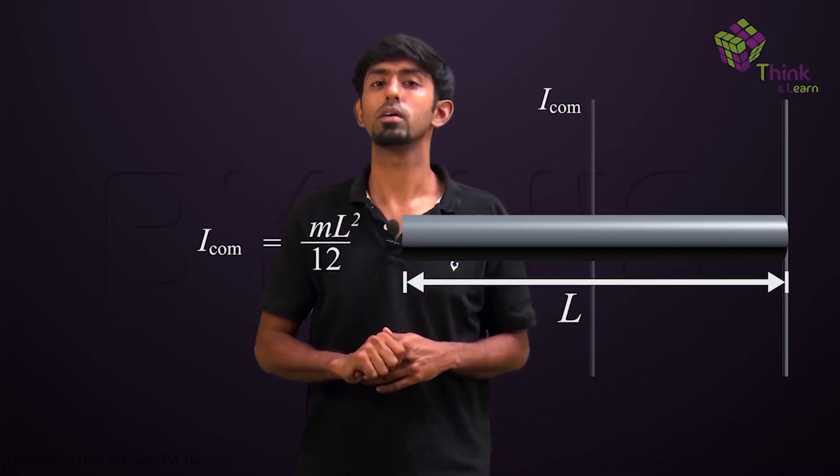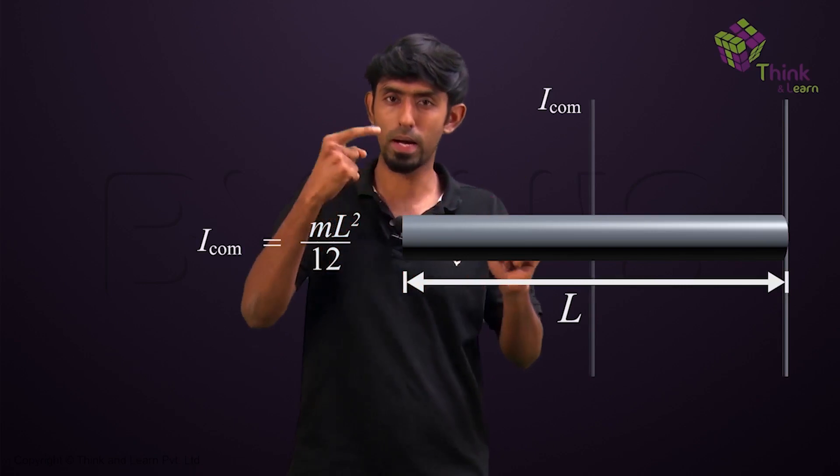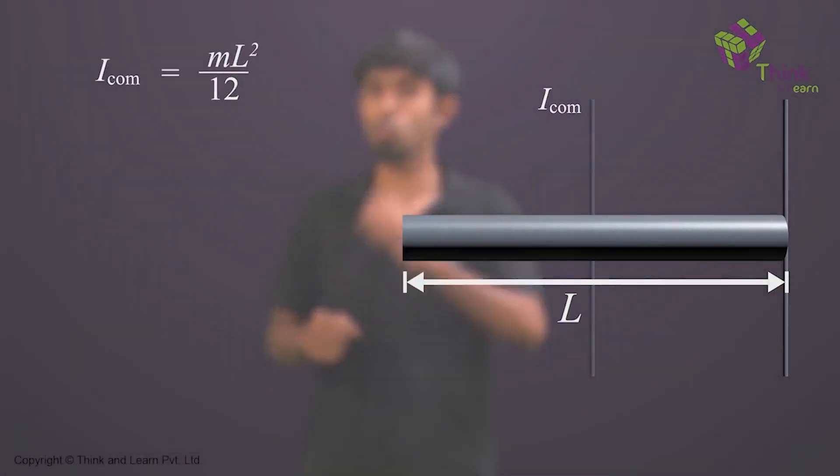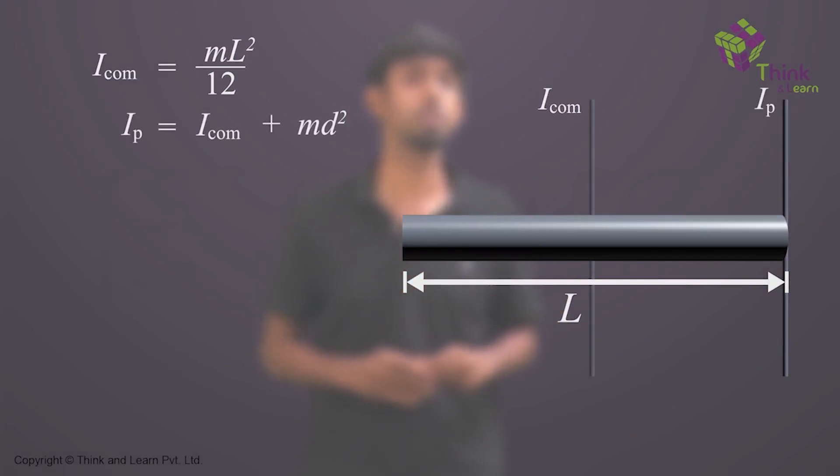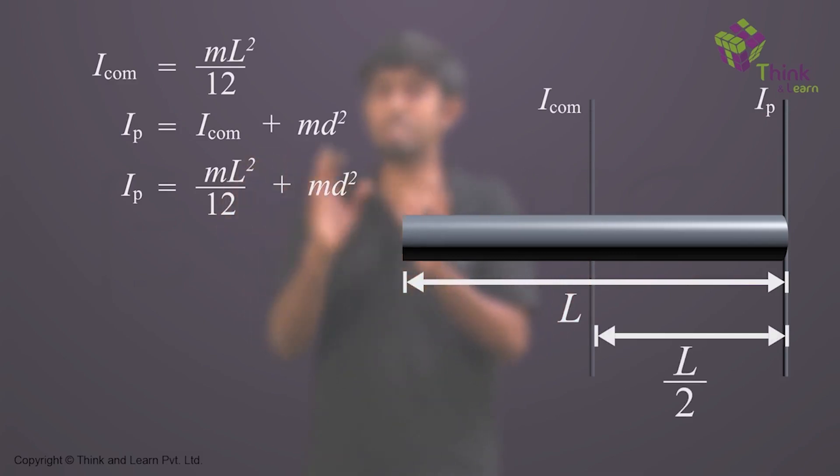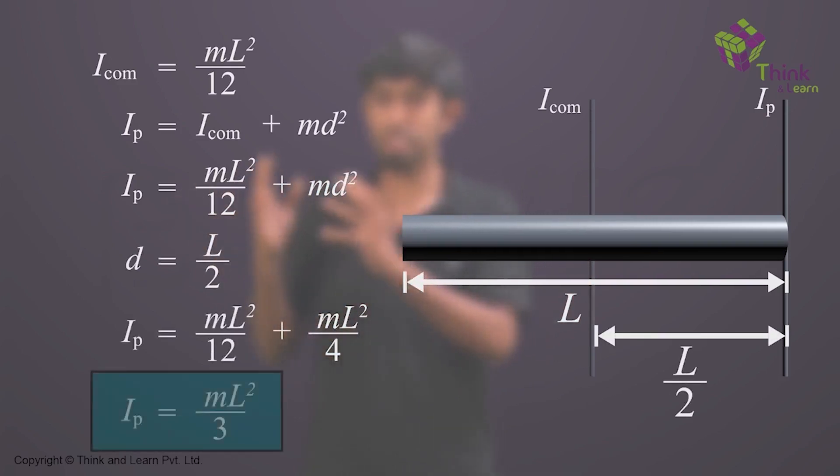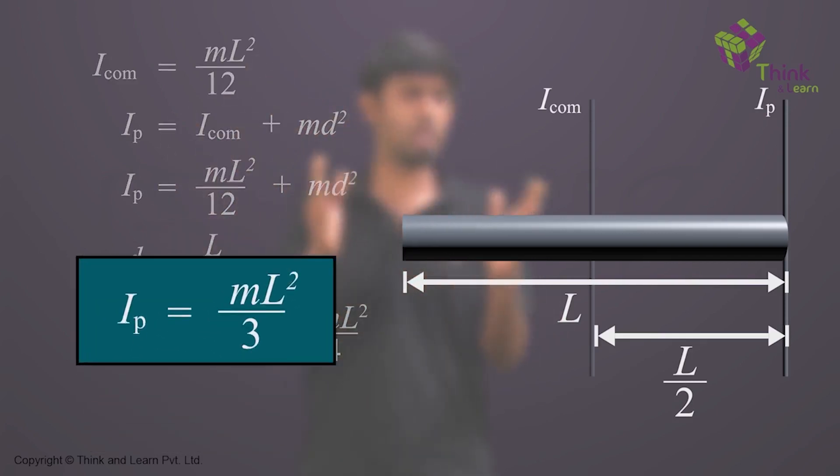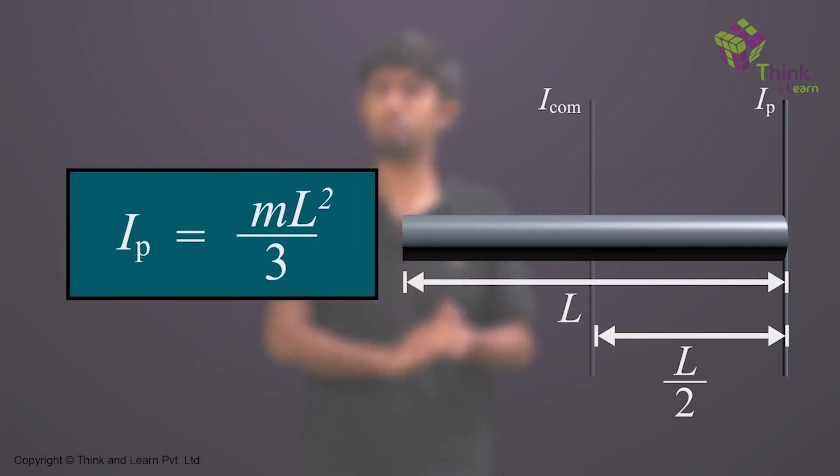You can do this now, right? You have ICM, which is going to be mL²/12, because that's the center of mass. You moved it by a distance L/2. So you're going to have m into d squared here. The d is L/2 the whole squared. Then if you add these two together, you'll get mL²/3, which is what you got in the beginning as well. So you did now in 30 seconds what took quite some time to do back then. And now you can take many more examples of this. And as you solve more problems, you will start appreciating the ease of using the parallel axis theorem.